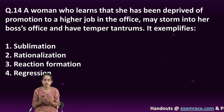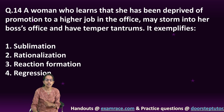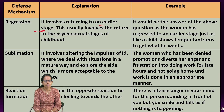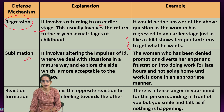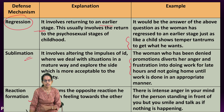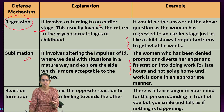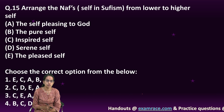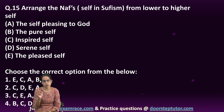A woman who learns she has been denied a promotion and turns back in the boss's office with temper tantrums is an example of regression — going back to an earlier stage of development. In sublimation, she would divert her frustration by staying at work and handling the situation in a professional, mature way. Reaction formation involves intense anger toward the boss but smiling when you see them. Defense mechanisms are extremely important — expect at least one question from this section every time.